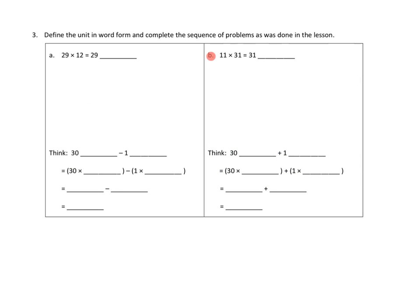We'll look at one more problem. Problem number three, define the unit in word form and complete the sequence of problems as was done in the lesson. Well, we've got to figure that out. So let's see. We've got to look at our problem 2B, 11 copies of 31. So we could think about that a couple different ways. We could think of it as 10 copies of 31 plus 1 copy of 31, but look, they've got it the other way. They've already given us a hint. This is the same as 31 elevens. Because we know it's commutative, so we know we can change the order of these two. We can express 11 times 31 as 31 times 11, or say it's, in unit form, 31 elevens. And I see they've got this down here below. 31 elevens. This is really nice.